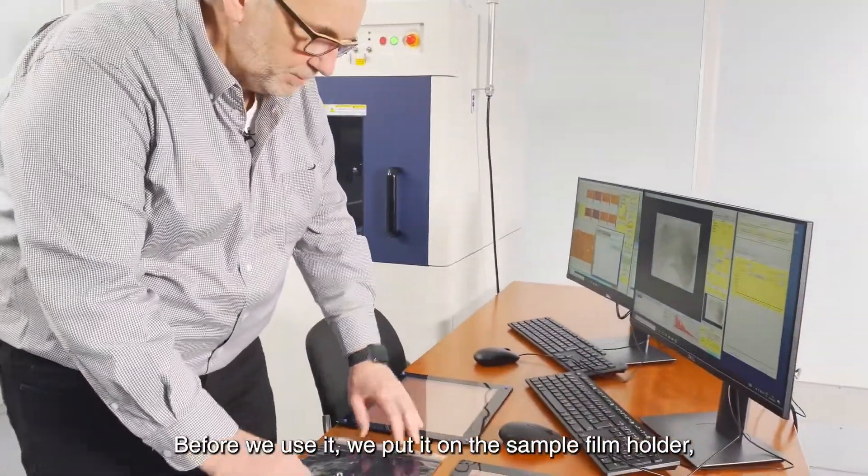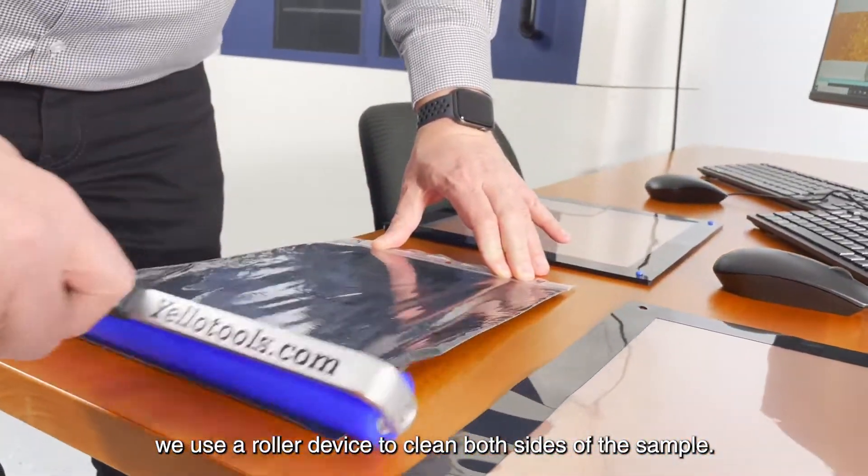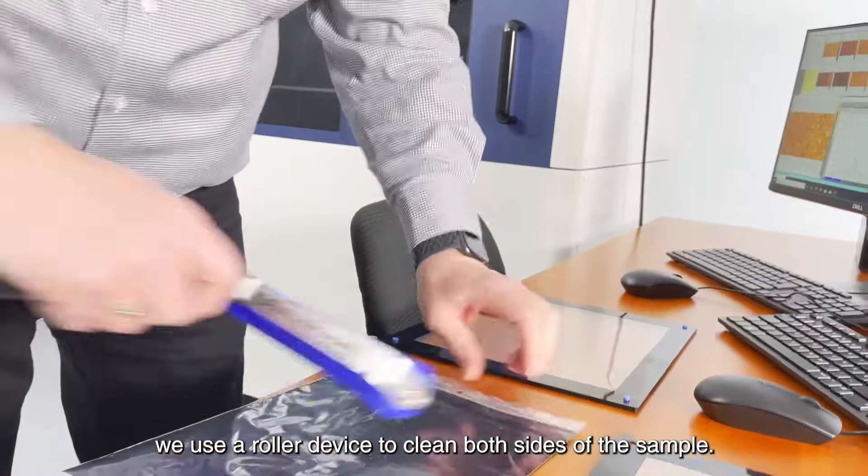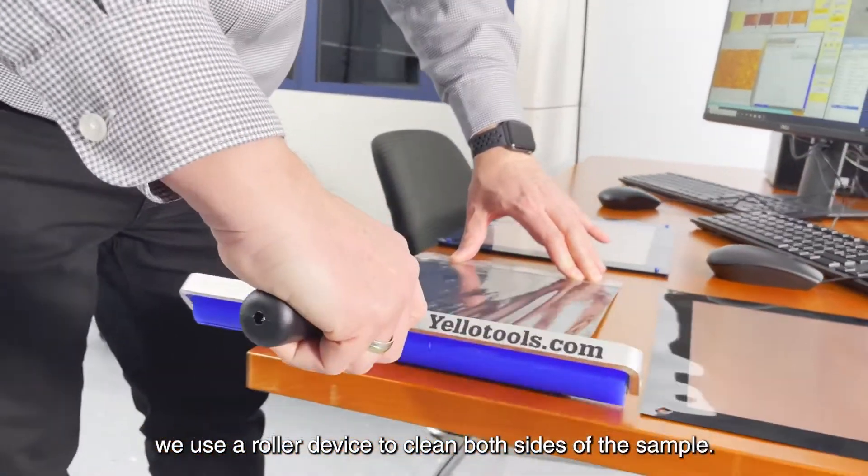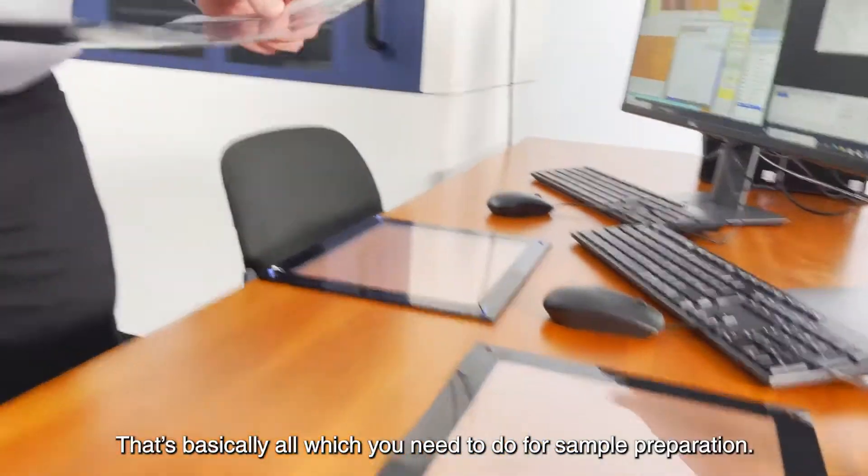Before we use it and put it on the sample film holder, we use a roller device to clean both sides of the sample. That's basically all which you need to do for sample preparation.